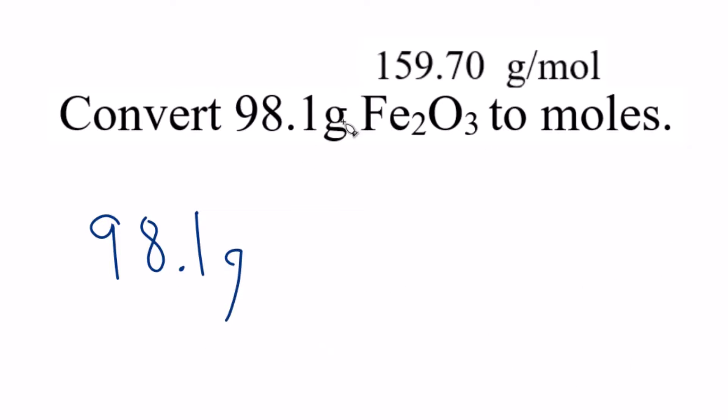So we've got our grams of Fe2O3. We multiply this times a conversion factor. So we have grams on the top. We need that on the bottom so they cancel out. We want to end up with moles, so moles has to be on the top. And we know from the molar mass, we have 159.70 grams, and that's in one mole of Fe2O3.